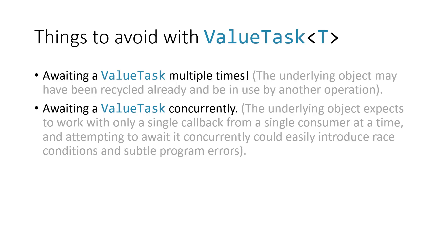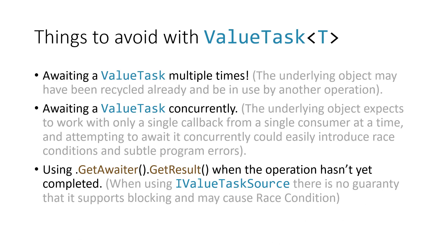We are specifically talking about the times the underlying object is an IValueTaskSource. We also cannot use GetAwaiter().GetResult() when the operation hasn't yet completed. With a Task that call would block until the result is available, but with ValueTask, if the underlying object is an IValueTaskSource, it may not block you and may cause race conditions.